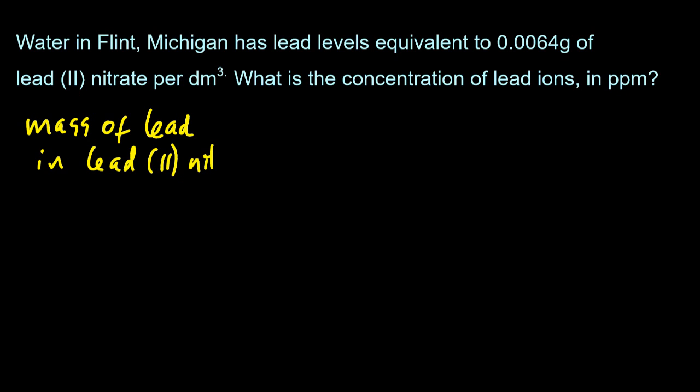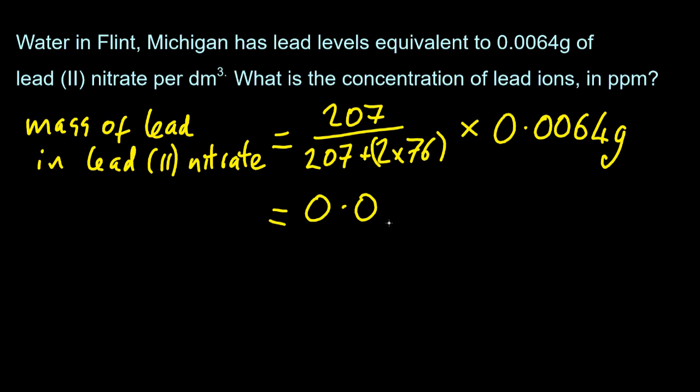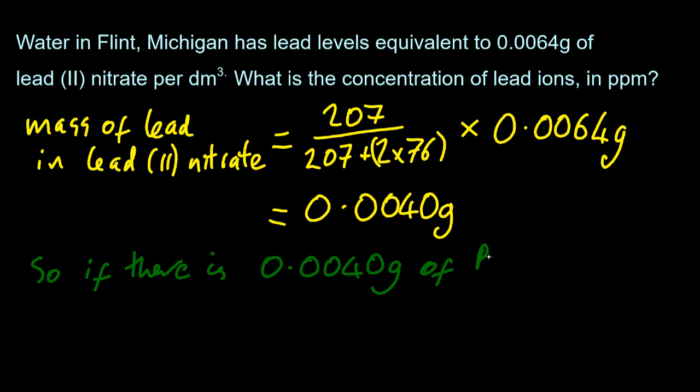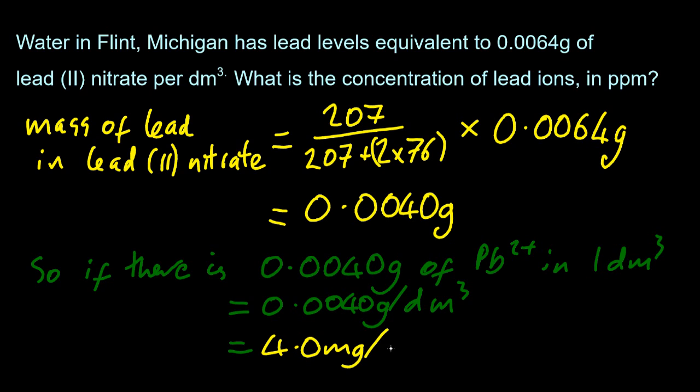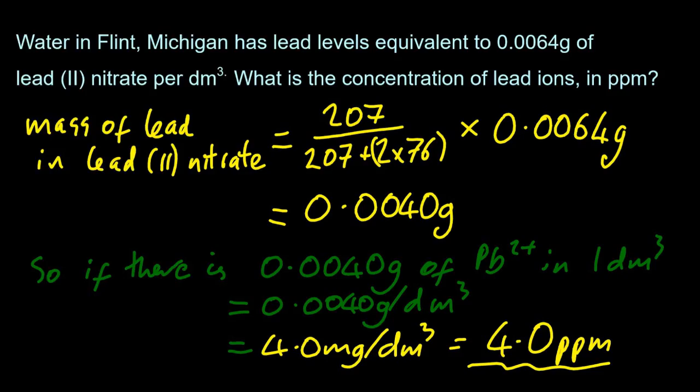So how do we go about it? So I need to work out the fraction for the mass of lead in lead nitrate. So I've got the molar mass of lead divided by the molar mass of lead nitrate. And that fraction should then be multiplied by the mass. That's a nice number. So if I've got 0.0040 grams of lead in one decimetre cubed, that's my concentration. And converting to milligrams by moving the decimal place along by three gives me four parts per million. Now don't worry that it's lead and lead two plus. Lead and lead two plus weigh the same. What's the difference? Two electrons? They're negligible.